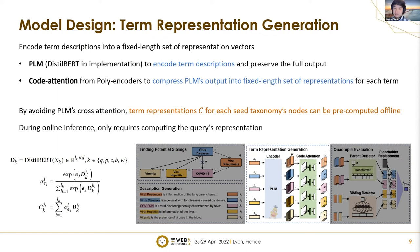In the next step, we generate term representations based on the descriptions. We encode term descriptions into a fixed-length set of representation vectors. First, we use the pre-trained language model — in our implementation, DistilBERT — to encode the term descriptions and preserve the full output, which is a matrix. Then we put the matrix into the cross-attention module from poly encoders to compress the output into a fixed-length set of M representation vectors per term. By avoiding cross-attention inside the pre-trained language model, the term representations for each seed taxonomy node can be pre-computed offline. So during online inference, we only need to compute the query's representation, avoiding running the pre-trained language model many times.